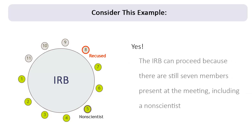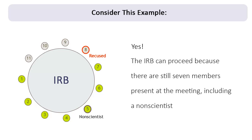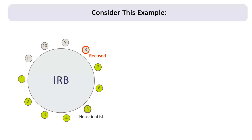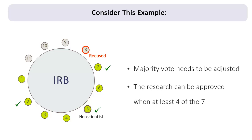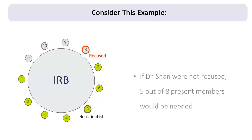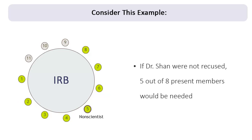Yes, the IRB can proceed because there are still seven members present at the meeting, which is more than half of 11, including a non-scientist. Note that when voting on this protocol, what constitutes a majority vote needs to be adjusted. Following Dr. Shan's recusal, only seven members remain to participate. According to the regulations, research must be approved by the majority of those members present. In this case, the research can be approved when at least four of the seven members vote in favor. Whereas, if Dr. Shan were not recused, there would be eight members present and a vote of five of those members would be needed to approve it.